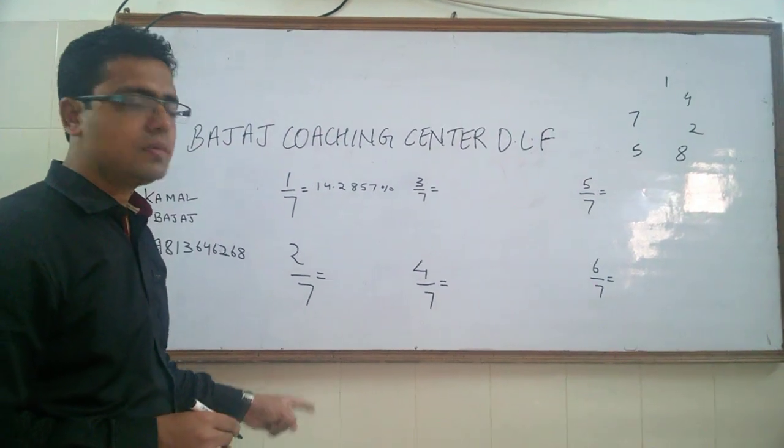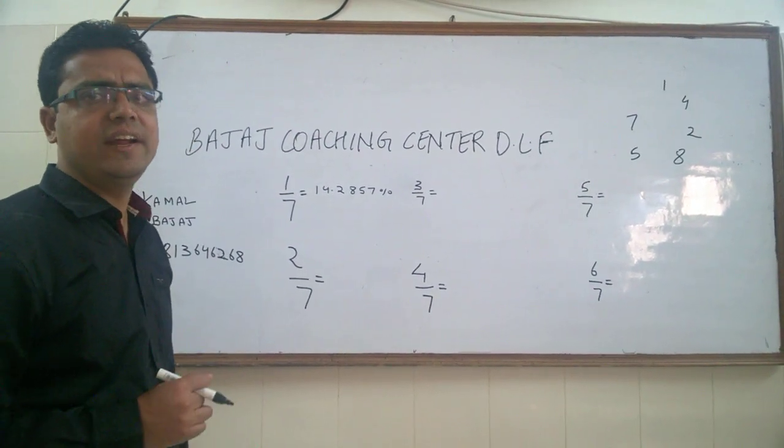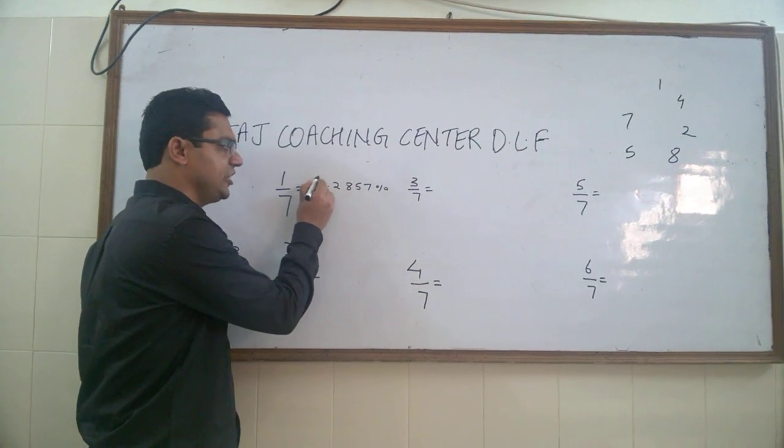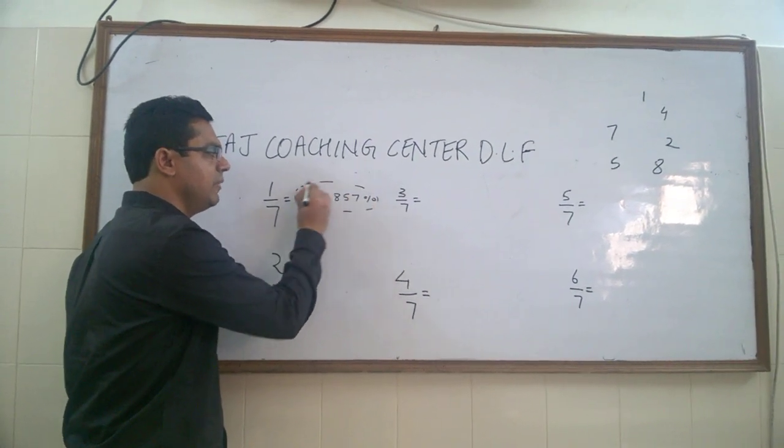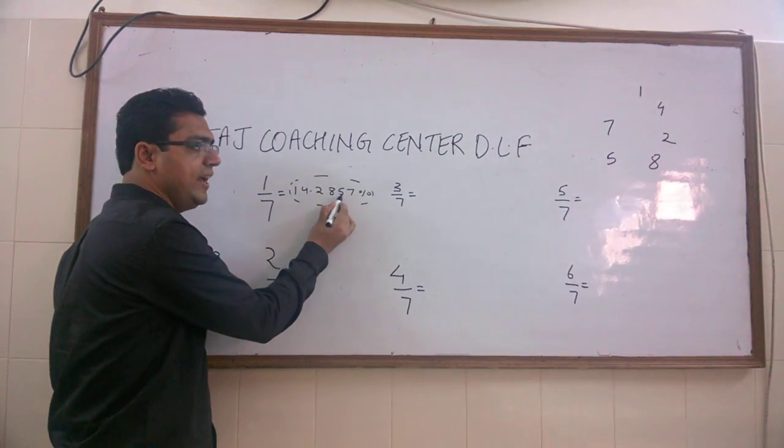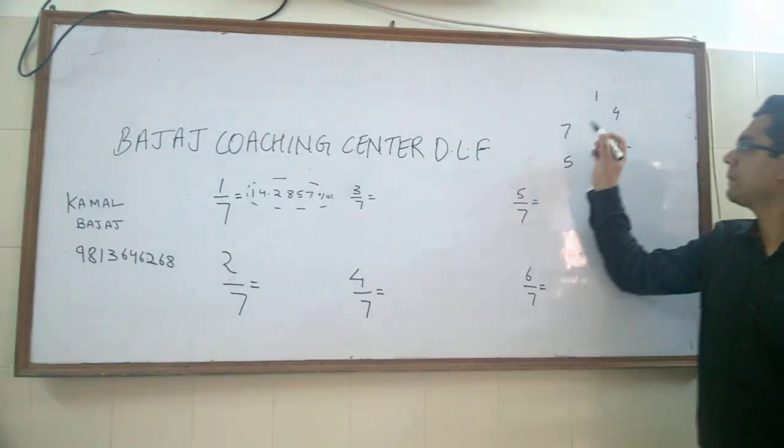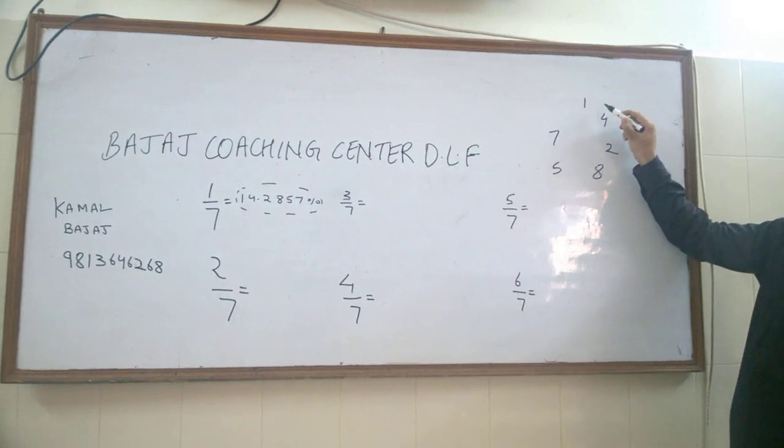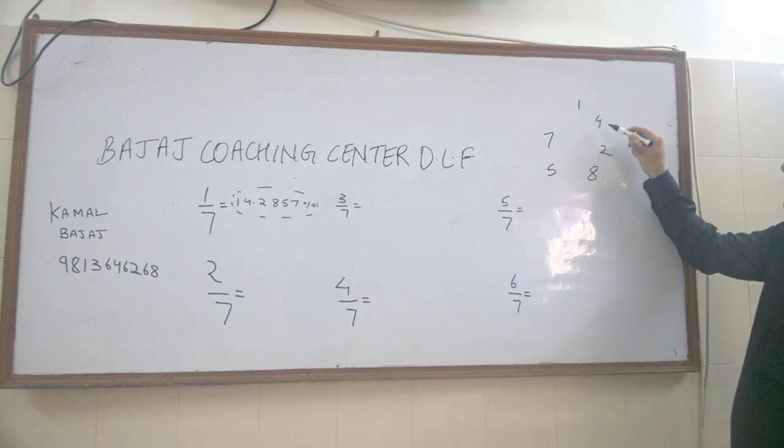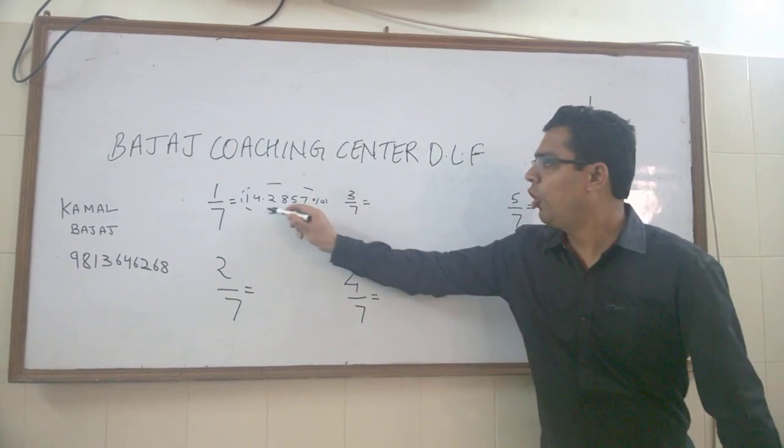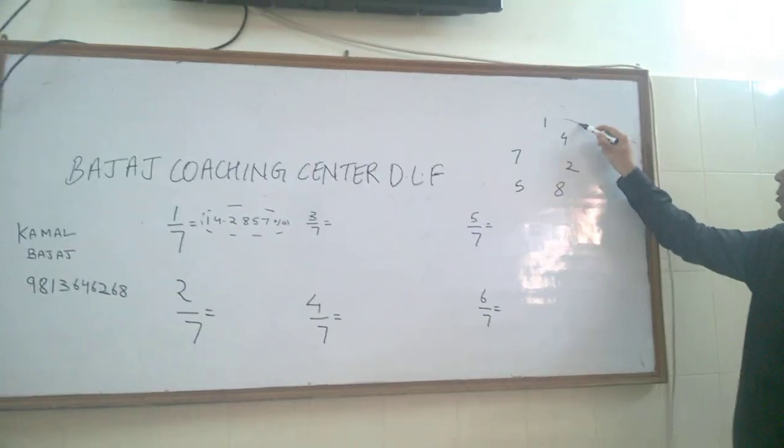One by seven into 100 percent, we will get 14.2857. But what about other fractions? You only have to remember one fraction. This fraction is very important: one by seven is 14.2857. I have written all the digits in cyclic order: 14.2857.